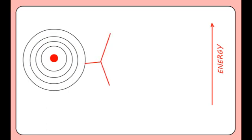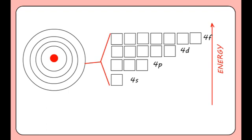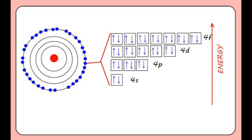The n equals 4 shell has four types of orbital, s, p, d and f. A full n equals 4 shell therefore contains 32 electrons. You will notice the number of orbitals within each subshell increases by two each time.